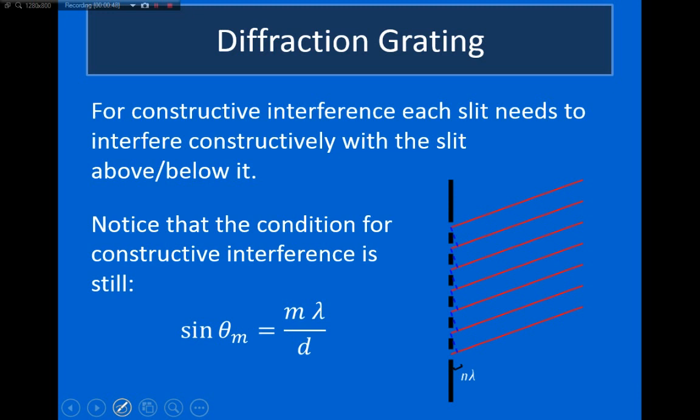Now, we can think about what the condition is for constructive interference. Looking at this figure over here on the right, we can see the idea is that constructive interference occurs when the light that passes through this top slit interferes constructively with the light that passes through the slit just below it. Then that slit interferes constructively with the slit below it, and so on.